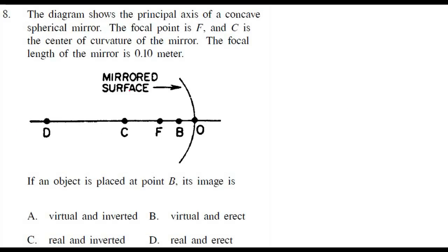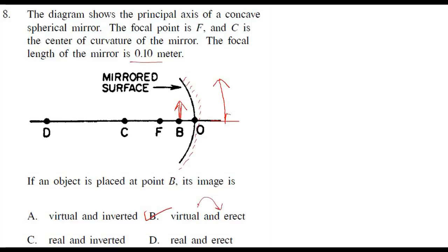This is a mirrored, reflecting surface — so this is basically a concave mirror. The focal length of the mirror is 0.1 meters and the object is between F and O. We know that the image is formed behind the mirror — it is virtual and erect. If you keep a small object there, you will get a very large, enlarged image. Virtual will always come with erect; there cannot be any image which is virtual and inverted — that is impossible. Real and erect is also impossible; real and inverted is possible, but here the correct answer is option B.